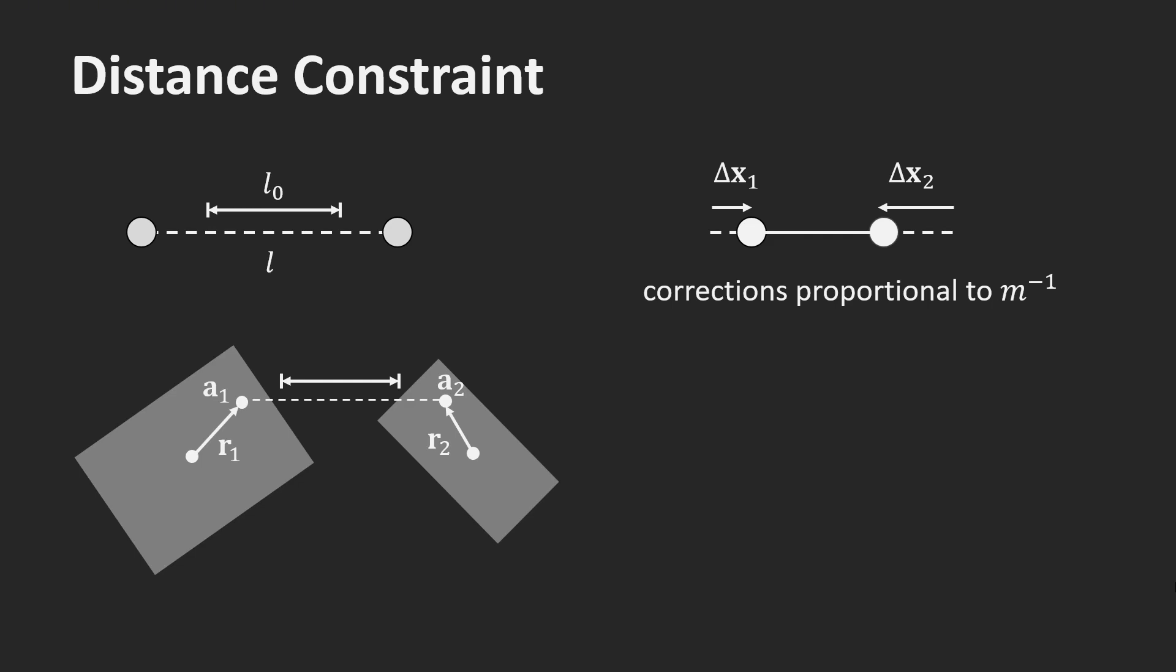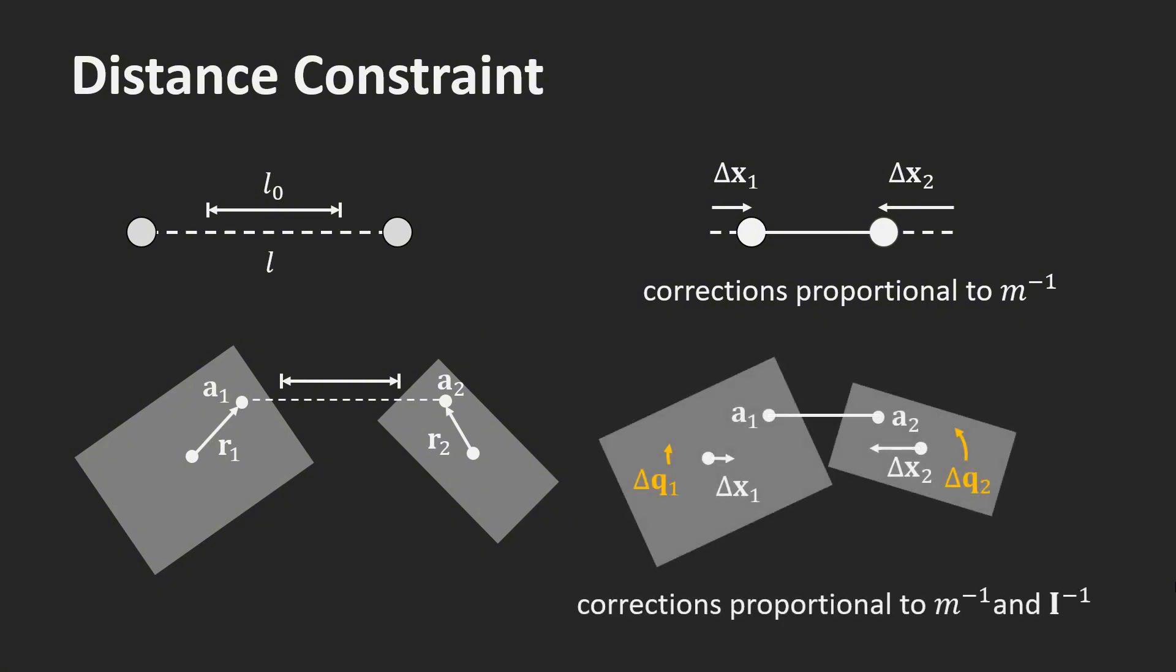In our example, the current distance between the attachment points is again larger than L0. Therefore, we pull the attachment points toward each other. Doing this not only pulls the centers of mass closer together, it also causes rotations of the bodies as shown in orange. The rotations are distributed proportional to the inverse moments of inertia.